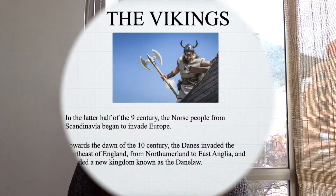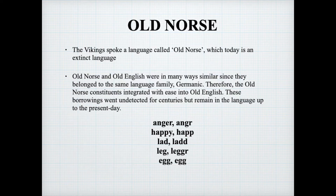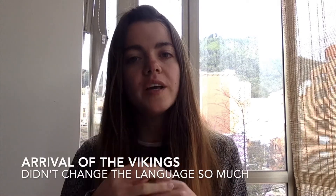The next major change to the English language was with the arrival of the French. So in the 9th century, the Norse people from Scandinavia began to invade Europe, and in the 10th century the Danes invaded the northeast of England and founded a new kingdom. They brought their language with them, which was known as Old Norse. Old Norse no longer exists. It was very similar to Old English as they both came from the same family — Germanic. Therefore, a lot of the words that entered into the English language remained undetected for centuries. You can see some examples below. So although the Vikings brought Old Norse to England, it was very similar to Old English, so it didn't make a huge change to the language itself, although it did introduce some new words.